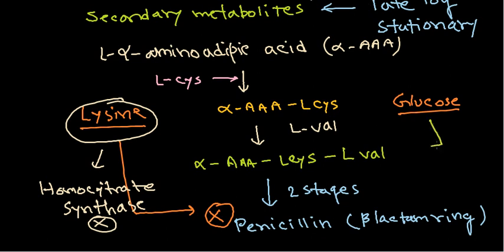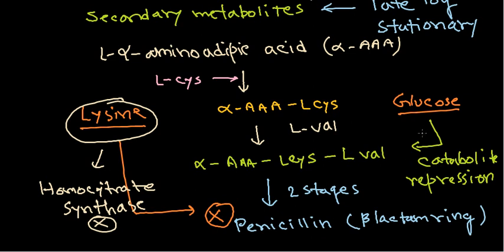Glucose can also inhibit this process because it is linked with catabolite repression. If there is a lot of glucose and the bacteria are growing fast, they may not produce penicillin. If glucose is present for a longer period, it is taken up readily by the bacteria, bacterial growth becomes very fast, and during that process penicillin production is halted.